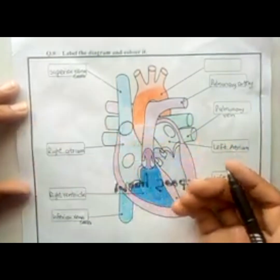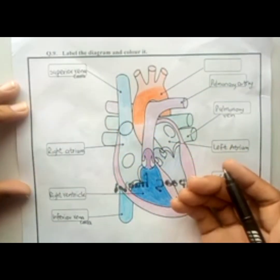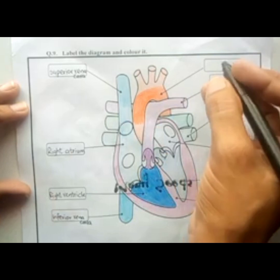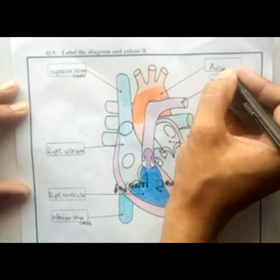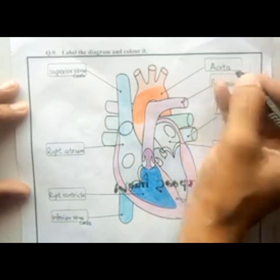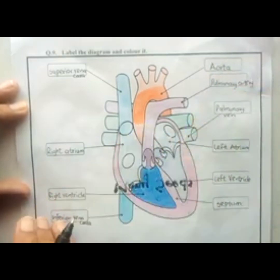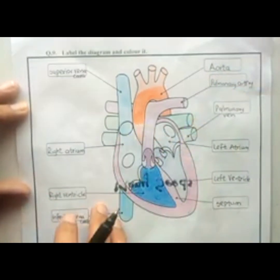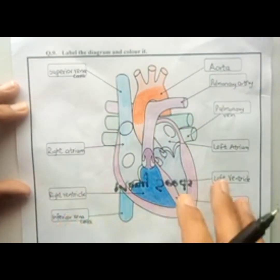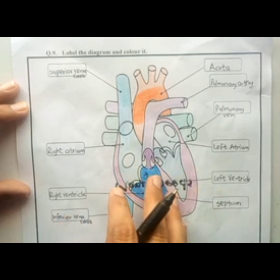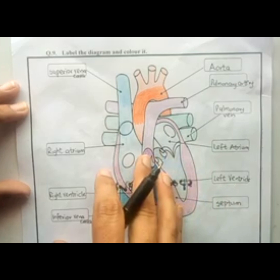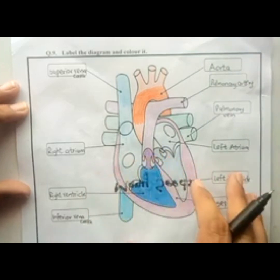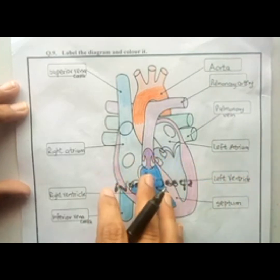We label here the word aorta. In this way, the heart supplies oxygenated blood to all parts of the body and deoxygenated blood to the lungs for oxygenation.